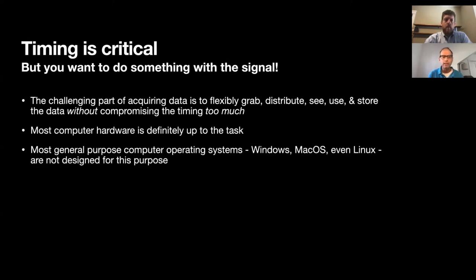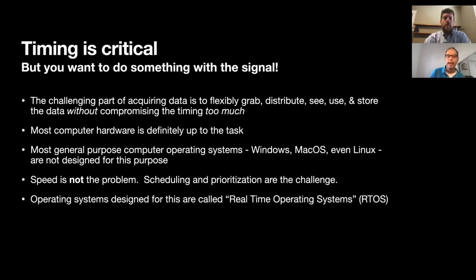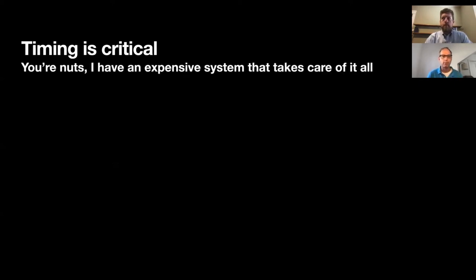Most computer hardware is up to the task. The problem isn't the hardware — it's the software. Most software we use every day is not designed for doing this actually. Whereas 50 years ago, the DEC PDP-11 was designed for doing this. The problem isn't speed, because speed has gotten way better than it was back then. The problem has to do with making sure that things you care about happen when they're supposed to happen — this is called prioritization and scheduling. There are designed systems for handling this called RTOS, or real-time operating systems. The PDP did have that. We've been using one over the past 25 years. It's not absolutely required, but it does help, making this problem a lot easier.